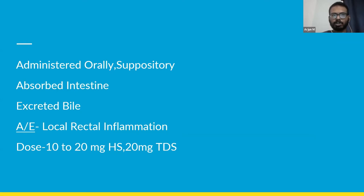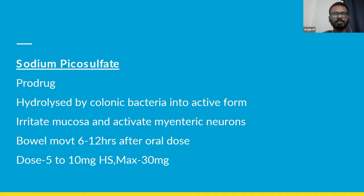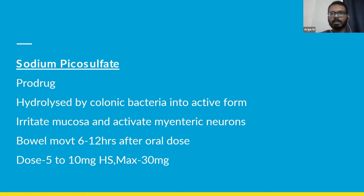Bisacodyl is absorbed in the intestine and excreted by bile. One adverse effect commonly seen with bisacodyl suppository form is local rectal inflammation. The dosage is 10 to 20 mg per night, which can be further titrated based on response. Sodium picosulfate, similar to bisacodyl, is also a prodrug hydrolyzed by colonic bacteria into its active form. Its mechanism of action is that it stimulates the mucosa, activates the myenteric neuron, and promotes peristalsis, leading to a bowel movement. A bowel movement usually occurs 6 to 12 hours after the initial dose. The dosage of sodium picosulfate is 5 to 10 mg at night, which can be further increased to 30 mg.